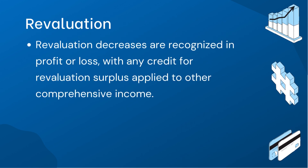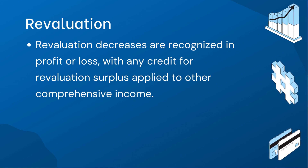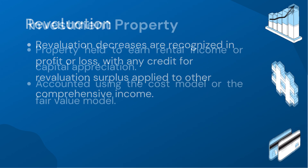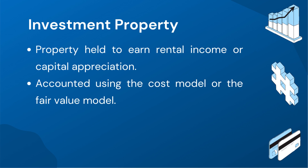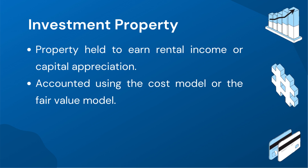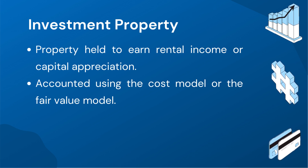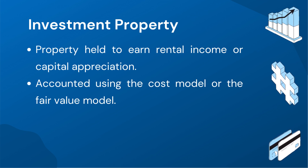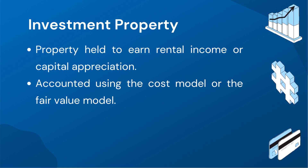On the other hand, when an asset's fair value decreases, the decrease is recognized directly in profit or loss. If there is any credit balance in the revaluation surplus related to the same asset, it is applied to other comprehensive income. Now let's move to the last topic on PPE, which is investment property. Investment property is a type of property held for the purpose of earning rental income or achieving capital appreciation. It can be accounted for using either the cost model or the fair value model. Under the fair value model, an investment property is measured at its current fair value, and any gains or losses are recognized in the profit or loss statement, allowing for a more accurate representation of property value in financial statements.